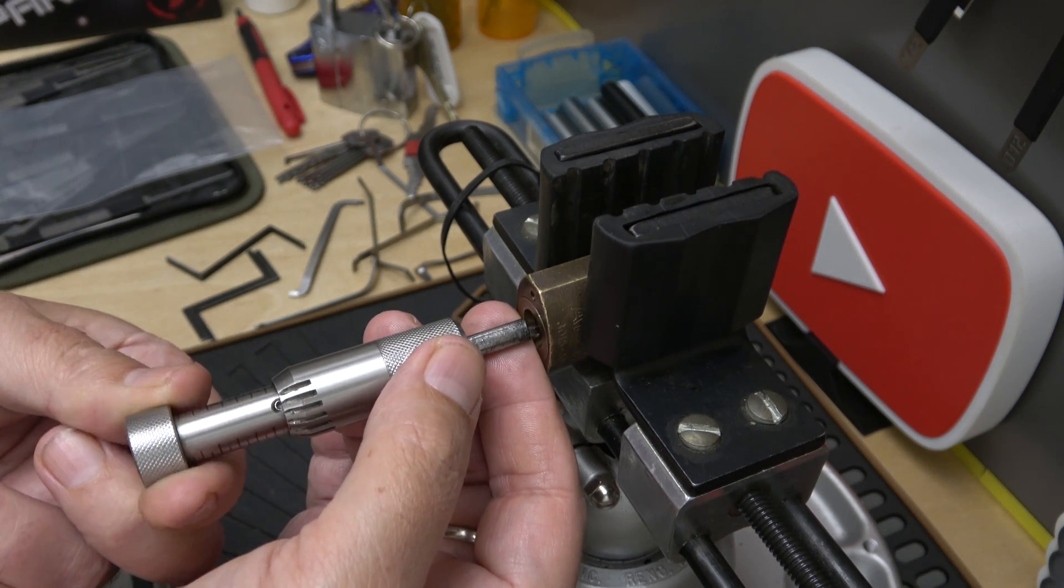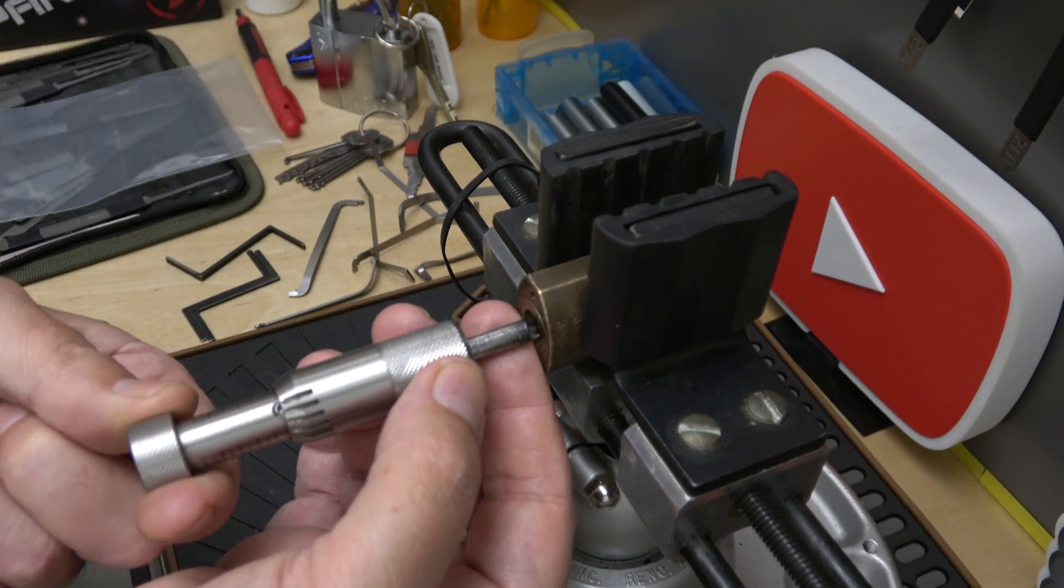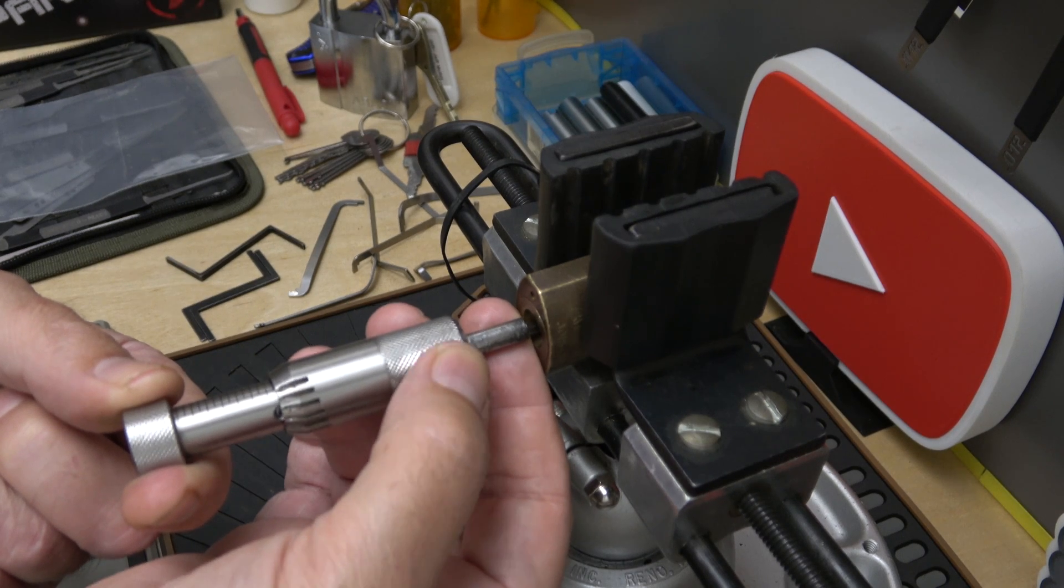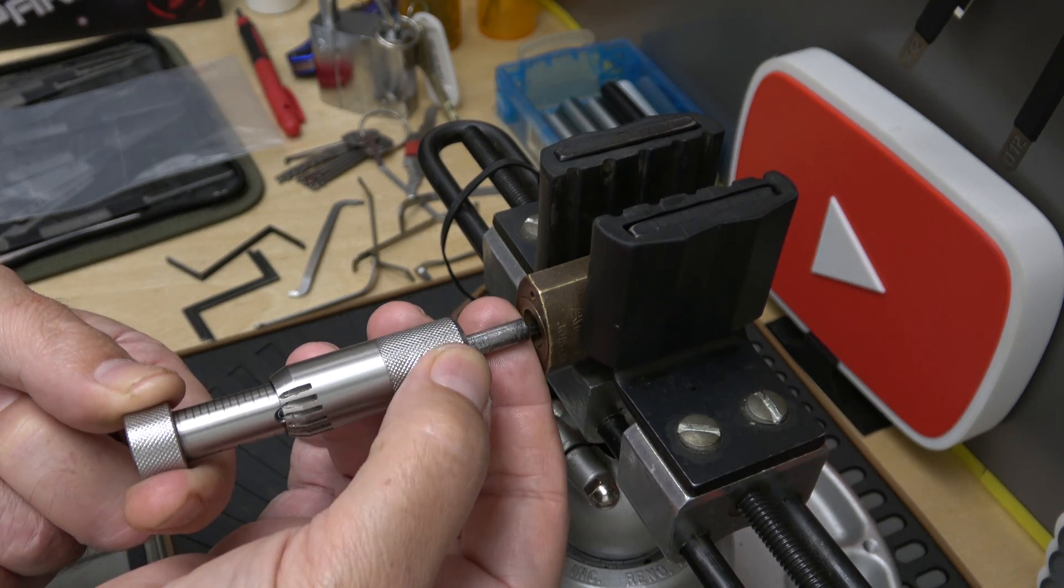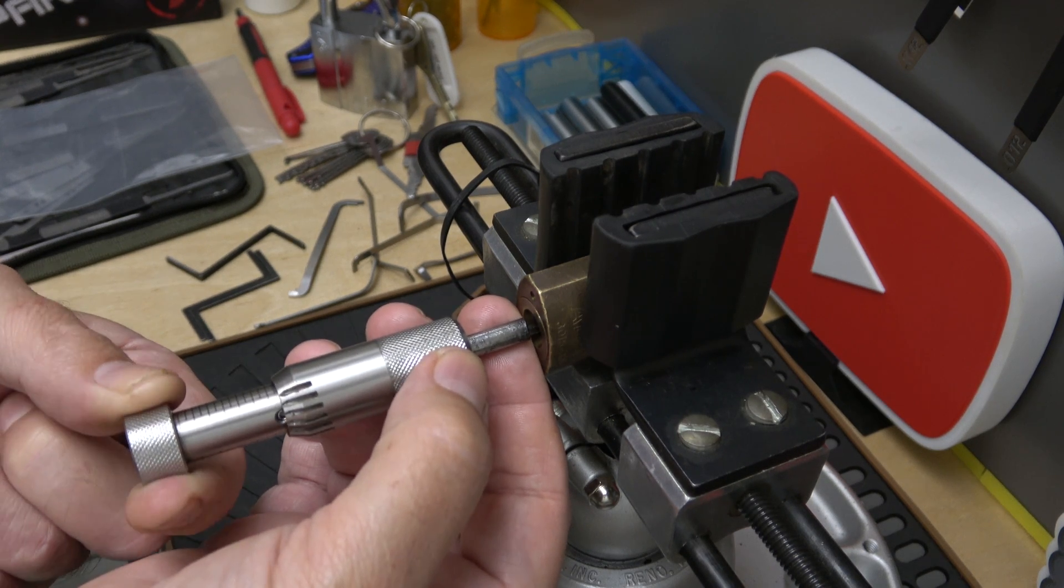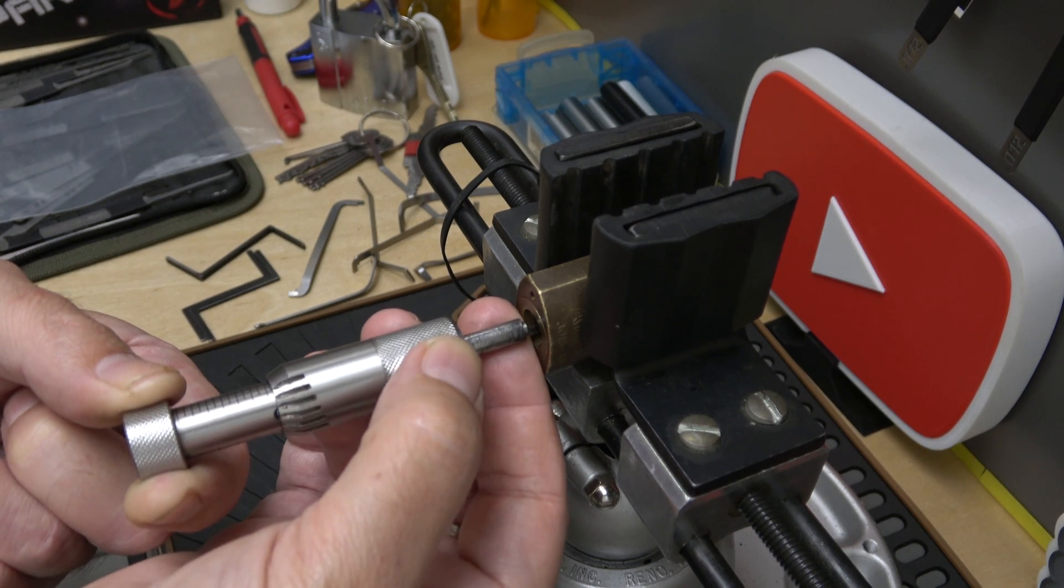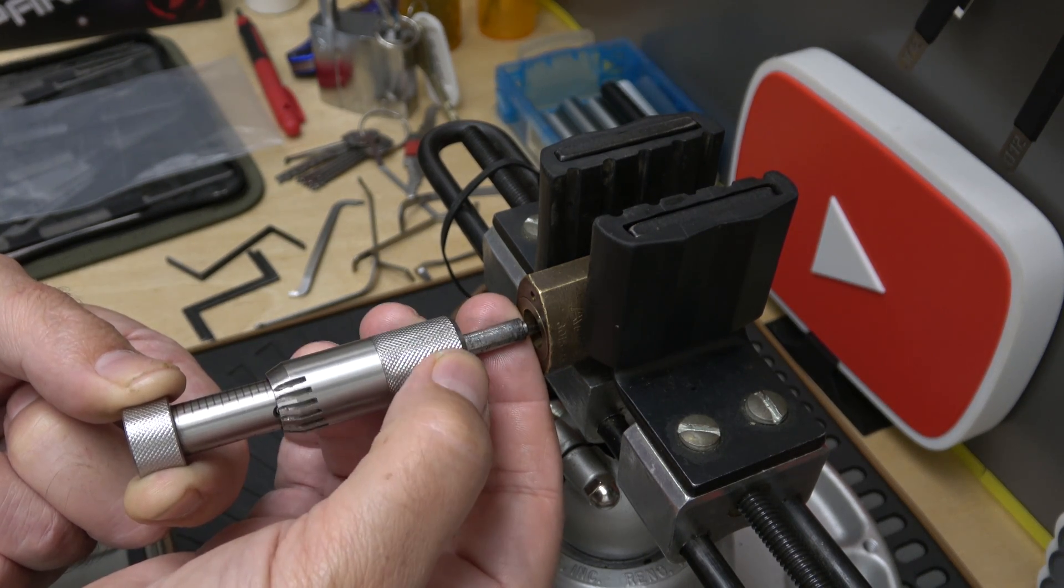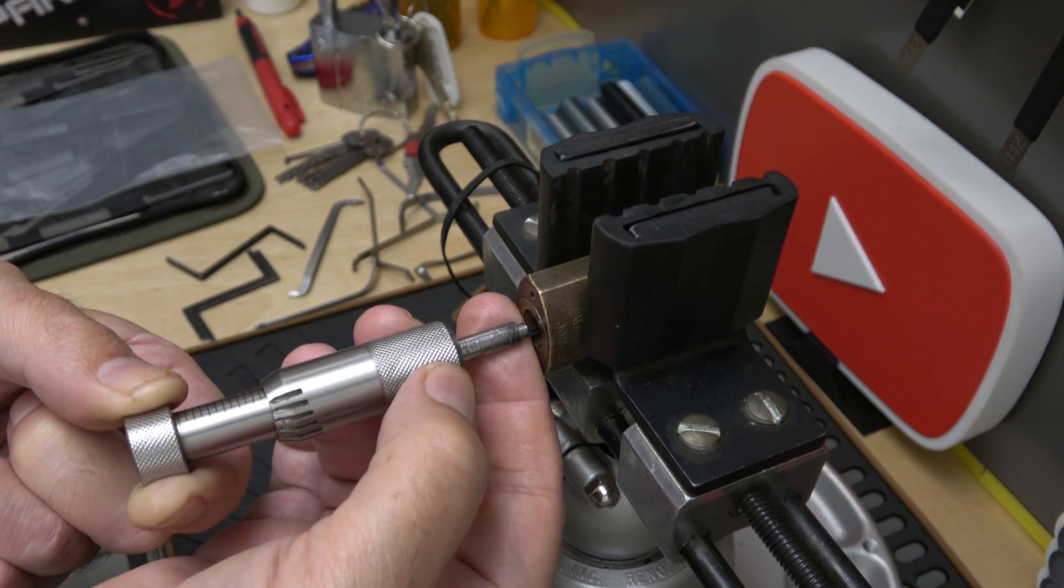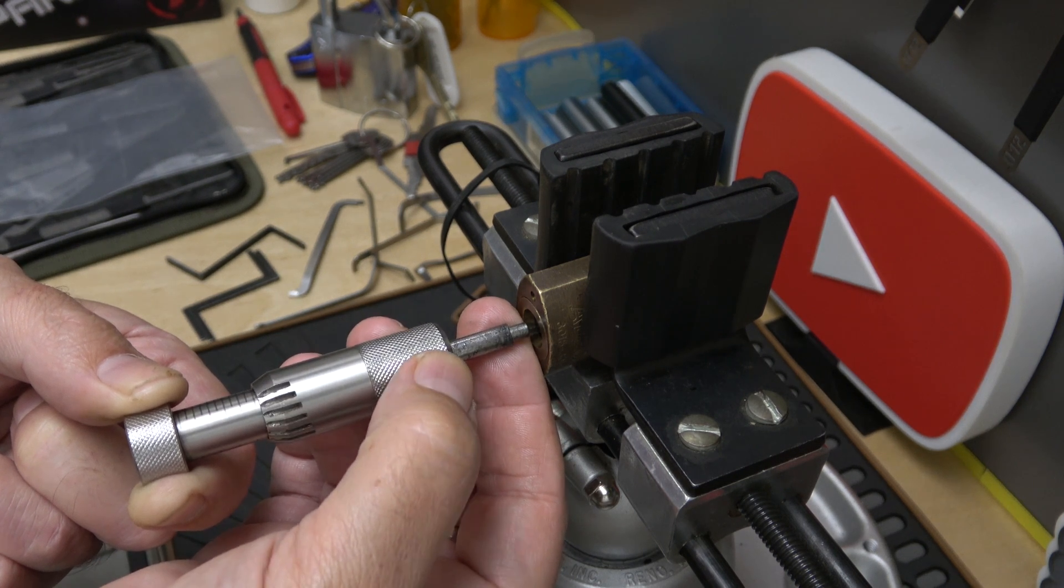All right, so we're on that last disc with the tensioner, and the tip is as far back as it'll go. Now let's start picking. Look for that next disc. That's tight. There we go. Pop loose. Next disc. That one feels loose. I'm not going to mess with it. That one's tight. There we go. Next one.